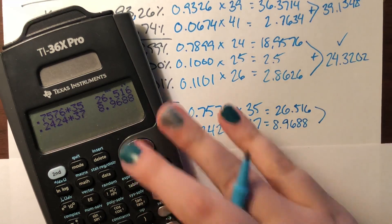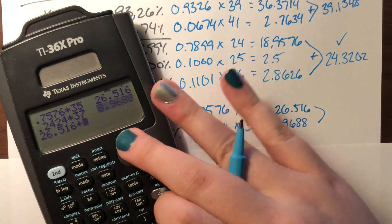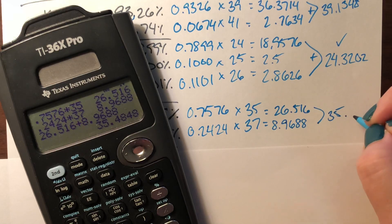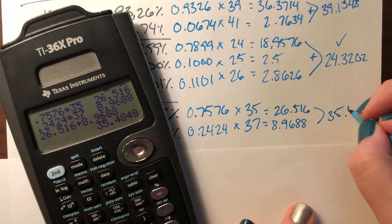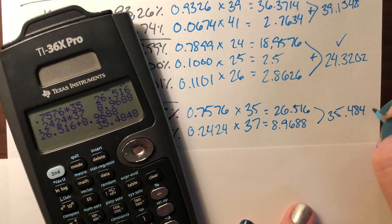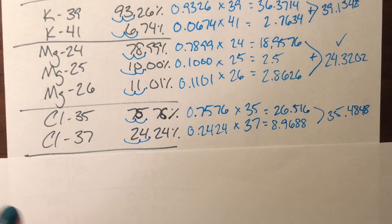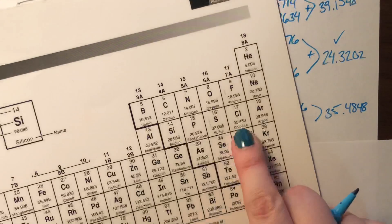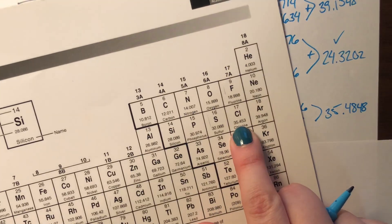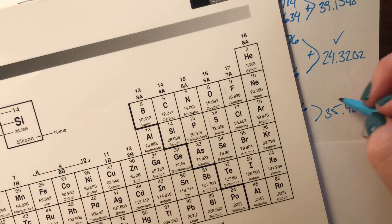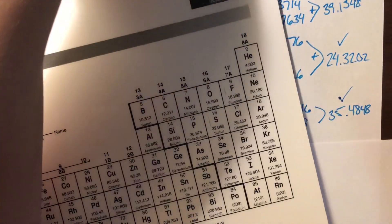Summing the products and checking against the periodic table, chlorine has a mass of 35.453 — close enough again.